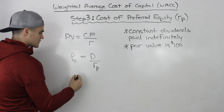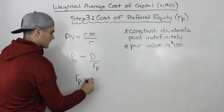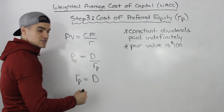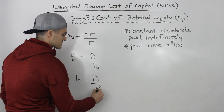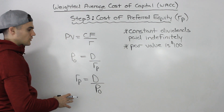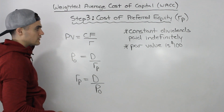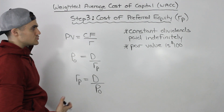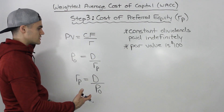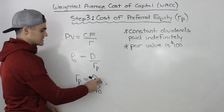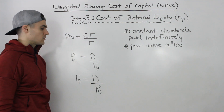If we rearrange this formula, the return on preferred RP is just equal to the dividend that's always being paid over the price of the stock. Notice there is no G, no growth rate involved here, because preferred equity usually pays constant dividends — so we just have the dividend with no growth associated with it.